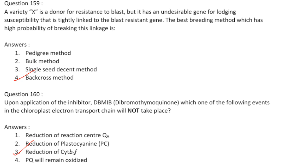Variety X is a donor for blast resistance but has an undesirable gene for lodging susceptibility tightly linked to the blast resistance gene. Any progeny carrying the desirable character will also carry the linked undesirable one. Breeders use the backcross method to remove linkage drag. Answer is option 4, backcross method.